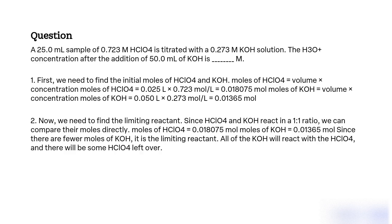Now we need to find the limiting reactant. Since HClO4 and KOH react in a 1:1 ratio, we can compare their moles directly. Moles of HClO4 equals 0.018075 mol. Moles of KOH equals 0.01365 mol. Since there are fewer moles of KOH, it is the limiting reactant. All of the KOH will react with the HClO4, and there will be some HClO4 left over.